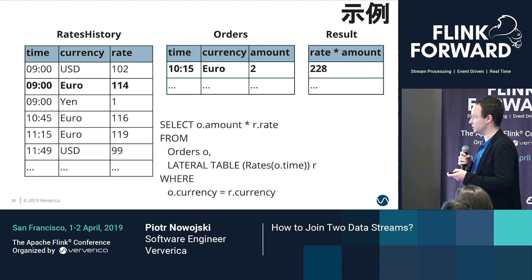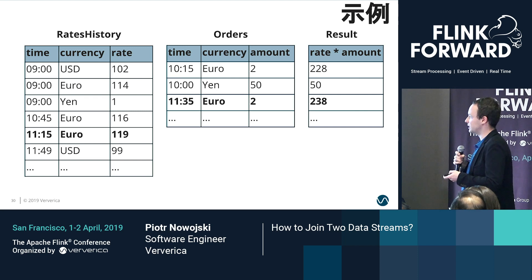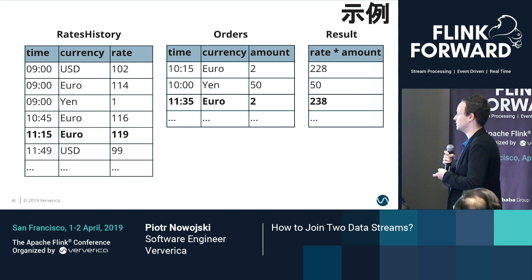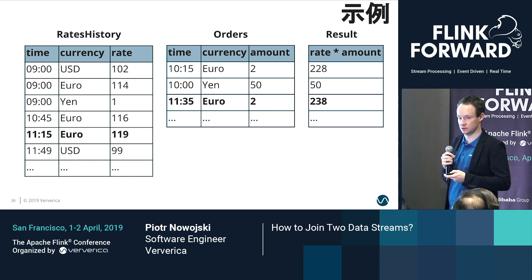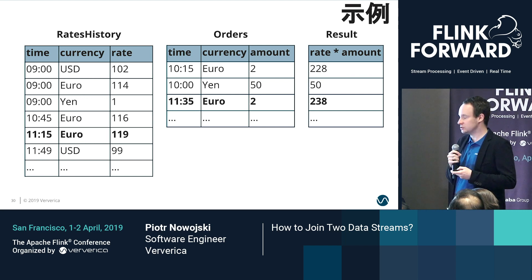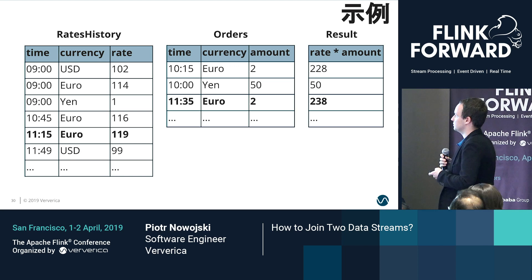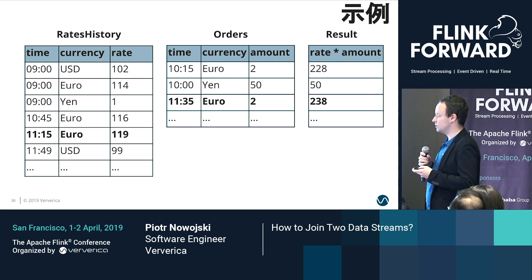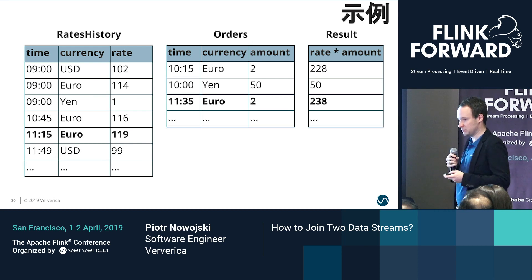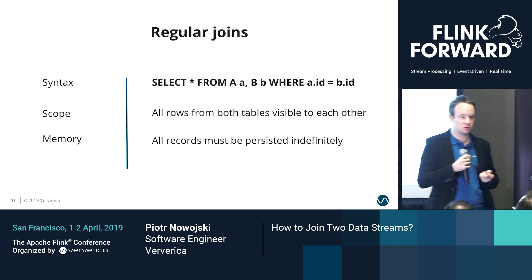The result would be 228. If we later process another order for 2 euros from 11:35, the temporal table join will note that the exchange rate has changed by that time, and the result will also be different. Temporal table joins also work with processing time as a side note, but this example assumes event time. I hope that after this you will have some feeling for how temporal table joins work, and let's sum up what we have learned today — and how those three ways to join data streams compare to one another.